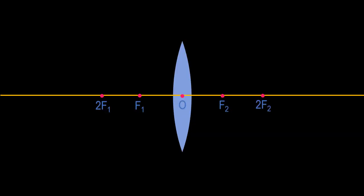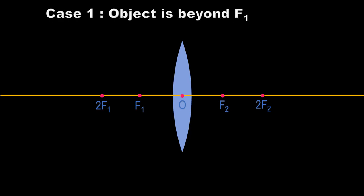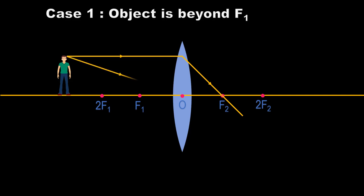I am now going to place an object in front of the convex lens and show how the image changes as its position changes. Case 1: when the object is beyond 2F1. Consider rays from the top of the object, in this case from the head of the boy. Take Rule 1 — the ray parallel to the principal axis refracts and passes through the focus F2. Take Rule 2 — the ray through the optical center goes straight, undeviated. The intersection of these two rays represents the image.